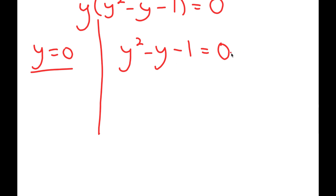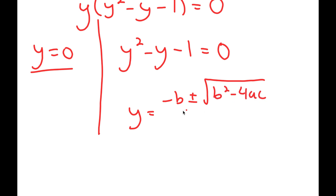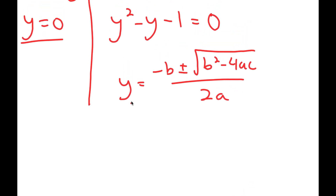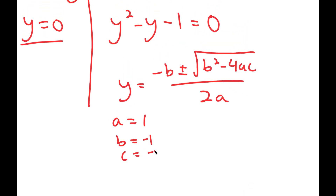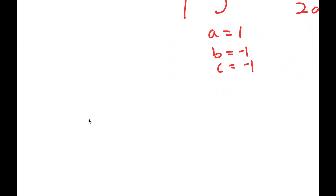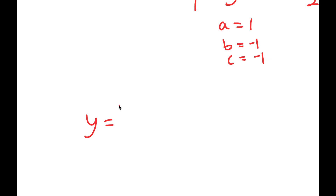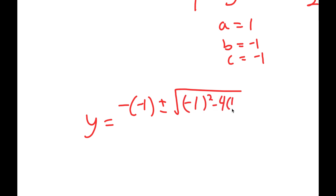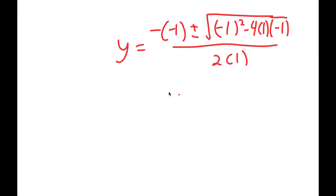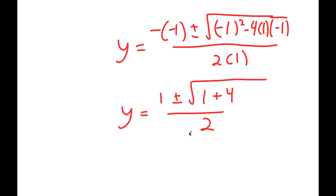For y squared minus y minus 1 equals 0, I'll use the quadratic formula: negative b plus or minus the square root of b squared minus 4ac, all over 2a. Here a is 1, b is negative 1, and c is negative 1. This turns into negative of negative 1 plus or minus the square root of negative 1 squared minus 4 times 1 times negative 1, all over 2 times 1. This equals 1 plus or minus the square root of 1 plus 4 over 2, which is 1 plus or minus the square root of 5 over 2.